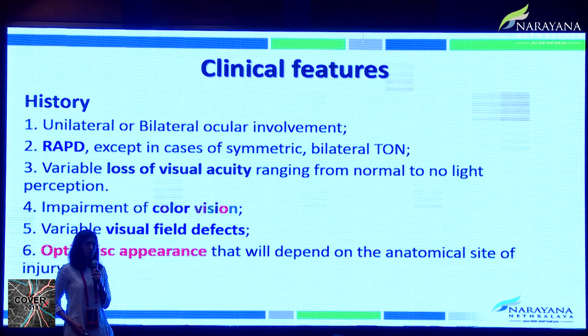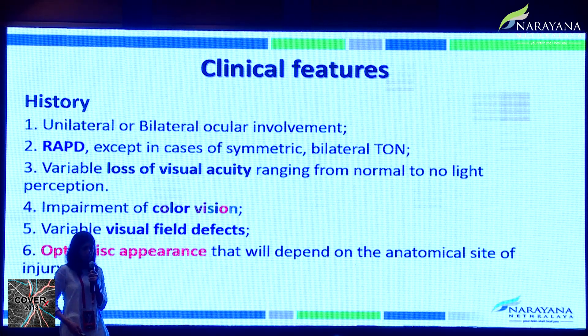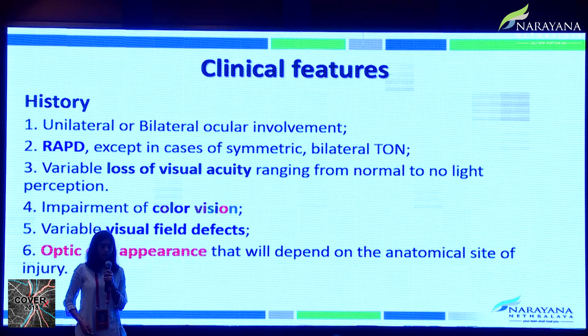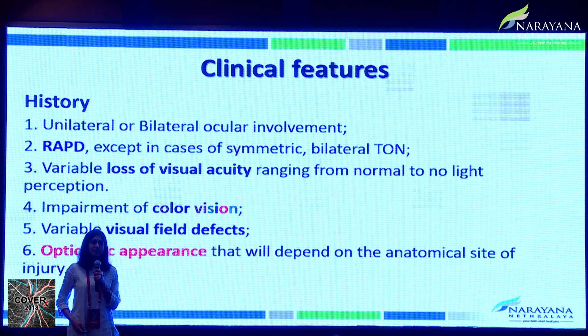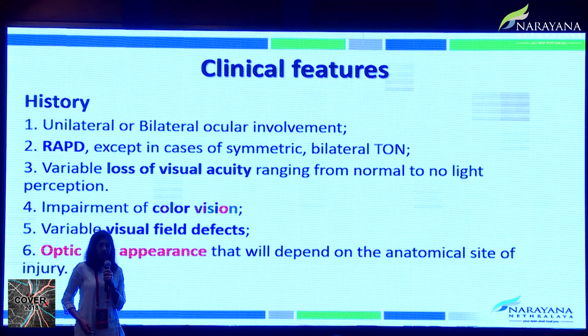The clinical features of traumatic optic neuropathy — it is essentially a disease of clinical diagnosis depending upon the history. It can be unilateral or bilateral. Patients usually present with RAPD unless it is a bilaterally symmetric case. Patients have variable loss of visual acuity, ranging from no perception of light to normal vision, impaired color vision, variable visual field defects, and optic disc appearance that depends on the anatomical site and timing of injury.